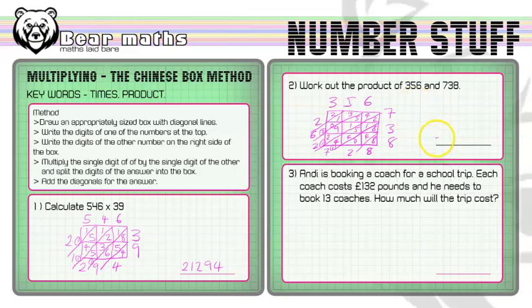So we get a final answer - the product of these two numbers is 262728. So we can multiply any numbers here. This is quite a large product.